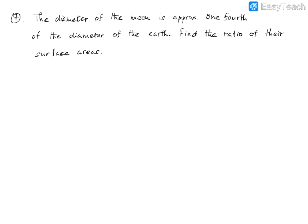The last three questions are question number 7, 8, and 9. Let us first do question number 7, wherein we are given that the diameter of the moon is approximately one-fourth of the diameter of the earth, and we are asked to find the ratio of their surface areas.